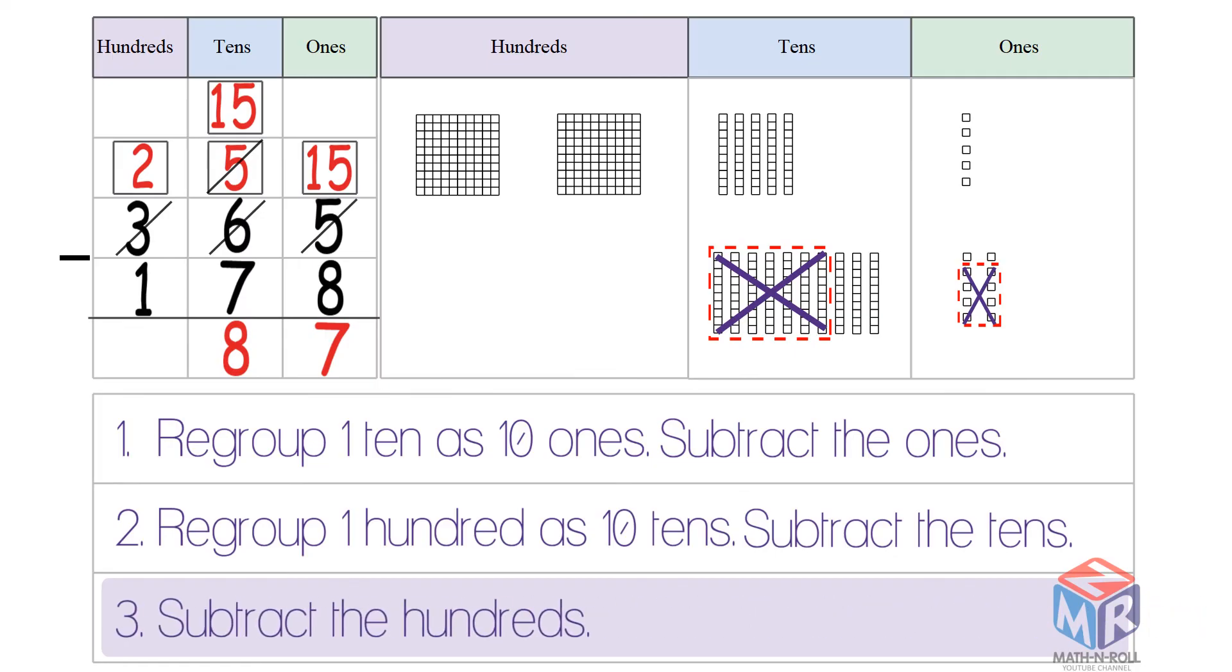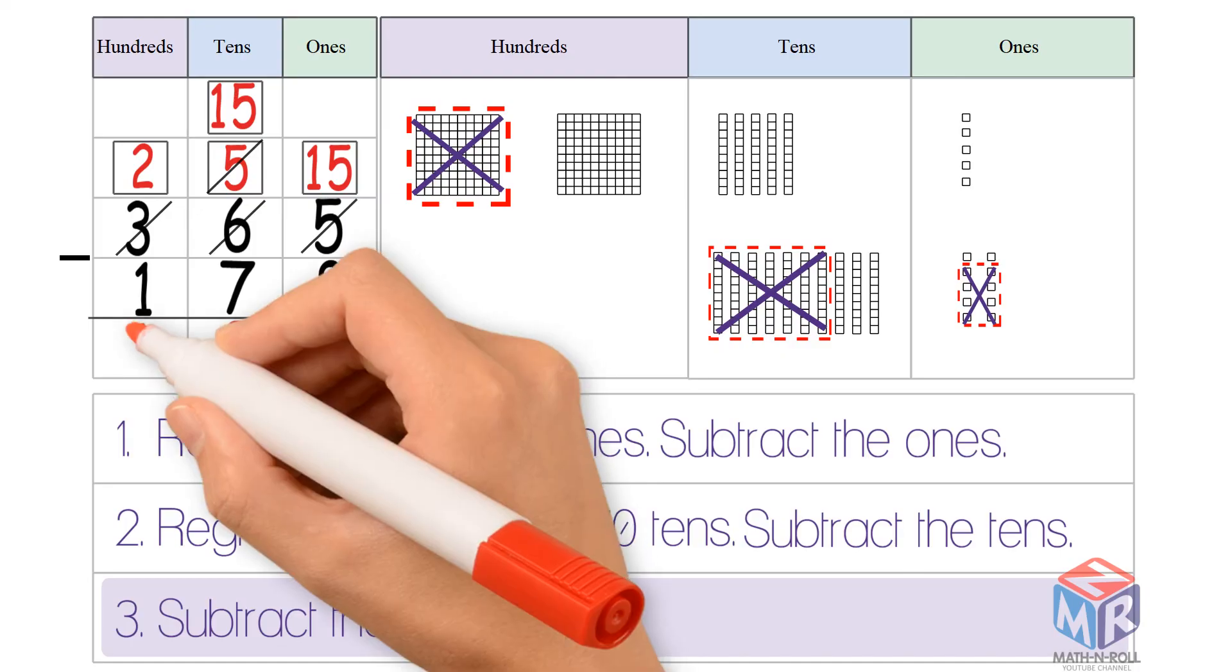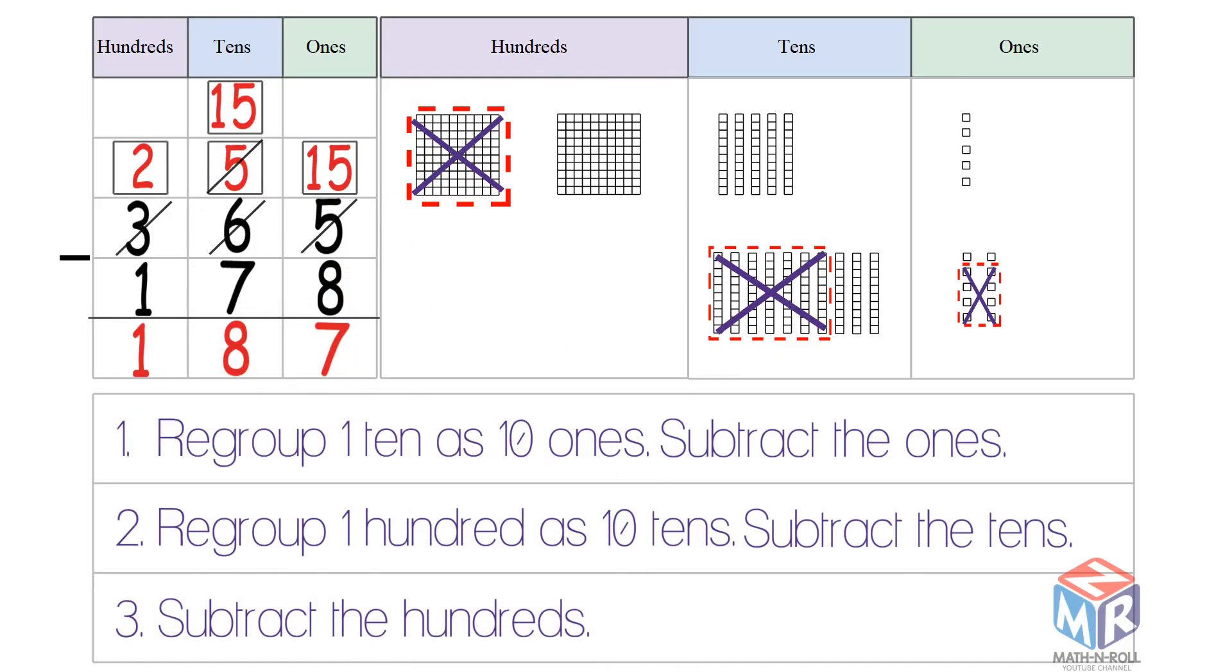Finally, subtract the hundreds. 2 minus 1 is equal to 1. So 365 minus 178 is equal to 187.